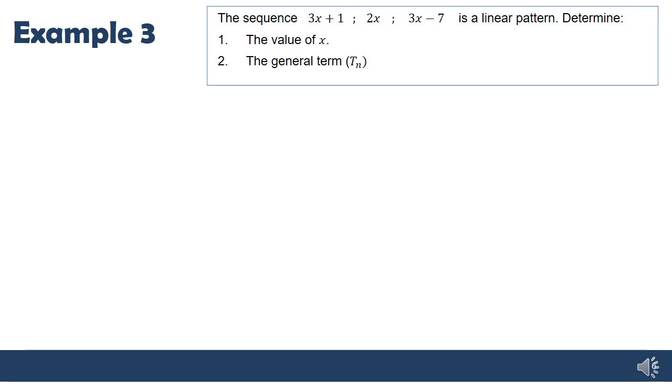Now let's try a more challenging one. Pause the video and see if you can get started, then check back. We're told that the sequence with expressions 3x + 1, 2x, 3x - 7 is a linear pattern. That's really important because it tells us there's a constant difference between the terms.